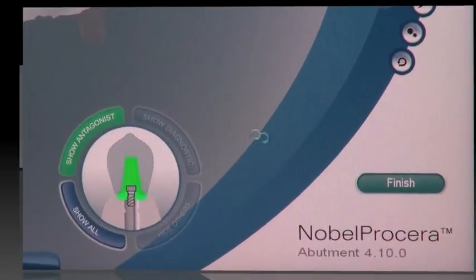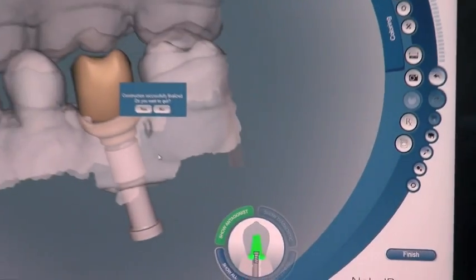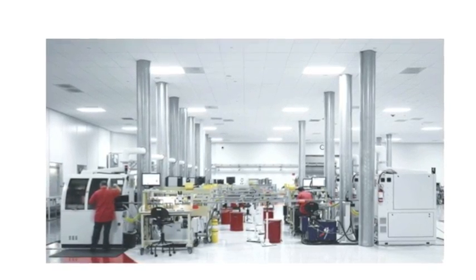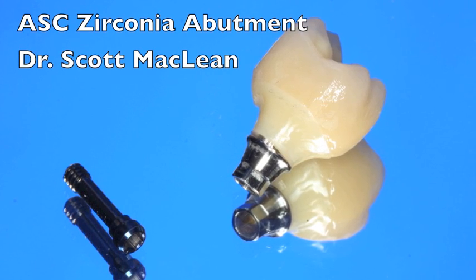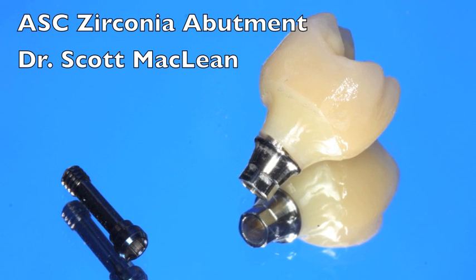Once you click the finish button and order it, it's going to go to Nobel Biocare and be milled on one of their big CNC machines. Then they're going to send it back so that the technician can add the porcelain to the abutment, making it into a beautiful screw retained crown.